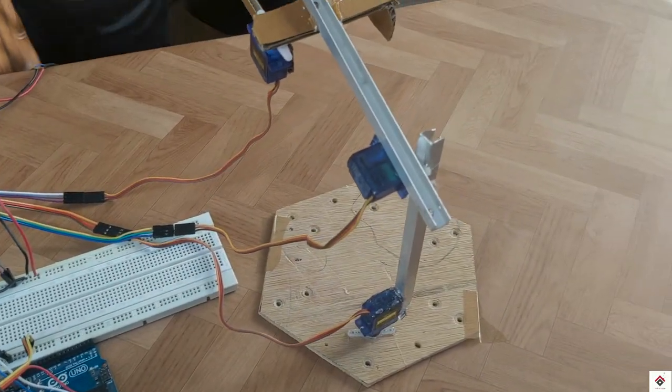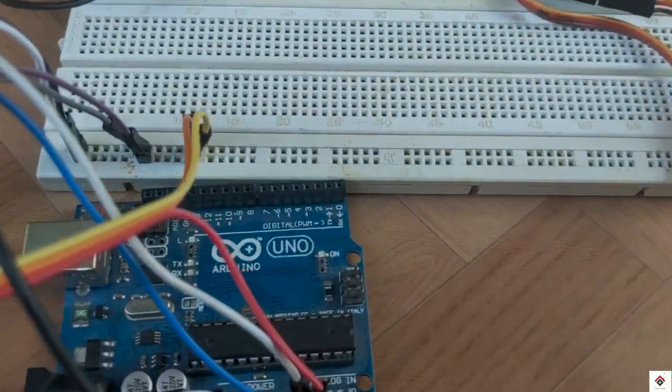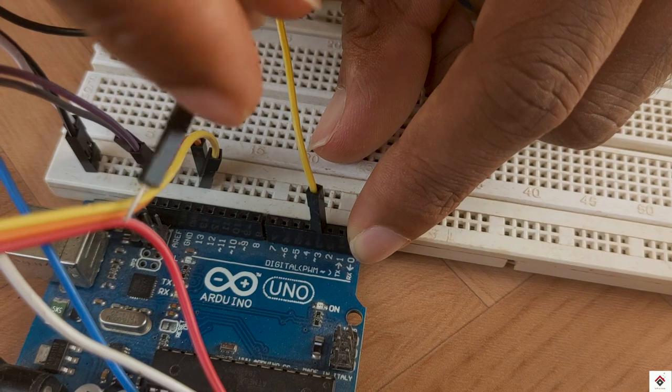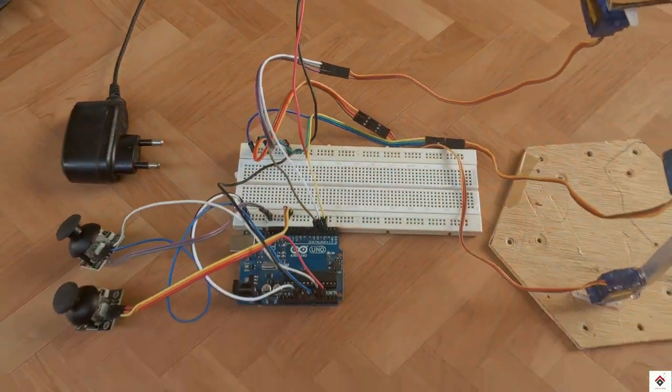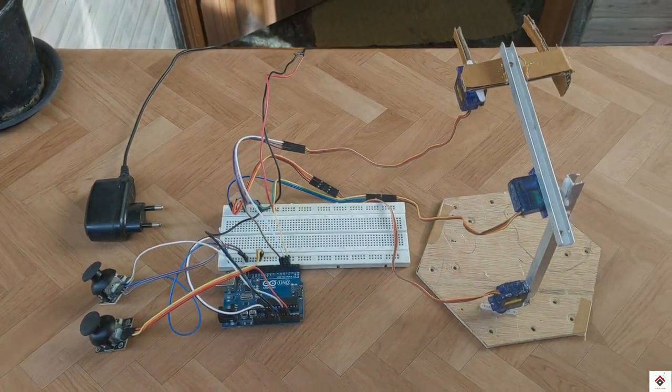Next we have signal pins from all three servo motors which will be connected to Arduino digital pins 3, 4, and 5. If you face any difficulties you can get the circuit link in the description box.